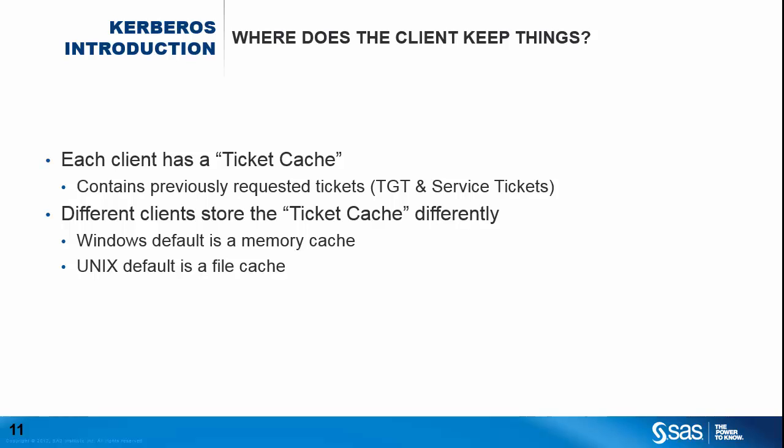Different clients store this ticket cache in different ways. Windows normally uses a memory cache, so if the machine is powered off, the ticket cache will be removed. On Unix systems, the default is to use a file cache, normally in the temp directory; however, this might be a memory-based file system, meaning the cache isn't really written to disk. On Linux, it has traditionally been a file system cache like Unix systems. However, newer releases such as Red Hat Enterprise Linux 7 are moving towards a memory-based cache, more like Windows.